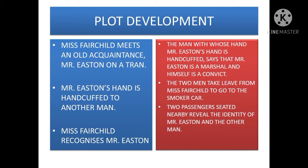Miss Fairchild recognizes Mr. Eastern. The man whose hand is handcuffed to Mr. Eastern's says that Mr. Eastern is a Marshal and that he himself is a convict. The two men take leave from Miss Fairchild to go to the smoker car. The two passengers seated nearby then reveal the true identity of Mr. Eastern and the other man.